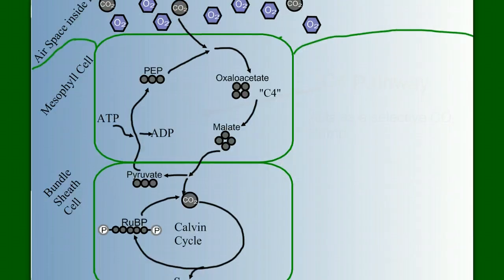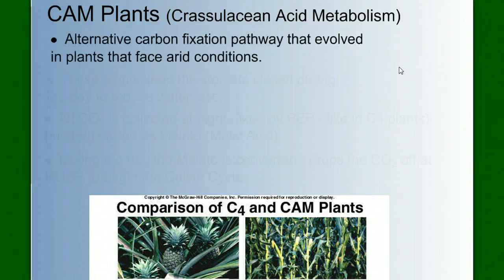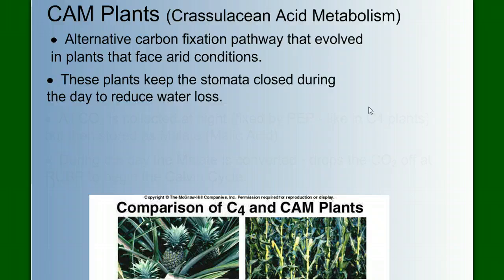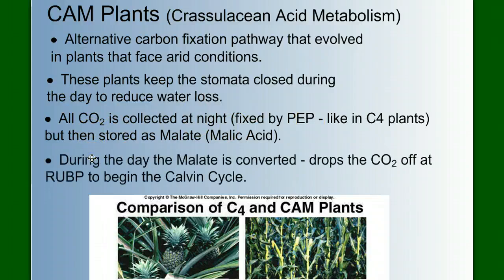And now let's take a quick look at CAM plants. We're not going to spend much time here, but CAM plants have evolved another pathway to fix carbon, and it's in response to plants that face very hot, dry conditions. So these plants, they keep their stomata closed during the day always. It's not just a sometimes thing. They're never going to have the stomata open during the day, and that's going to reduce water loss. But the problem is, that really limits how they can photosynthesize, because it's during the day that the light's out. So what the CAM plants do is that, during the night, they collect carbon dioxide. They fix it and store it, fixed by PEP like C4 plants, and store it as malate. Then, during the daytime, they shut the stomata and convert the malate back to CO2 and begin the Calvin cycle.